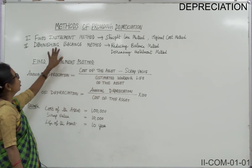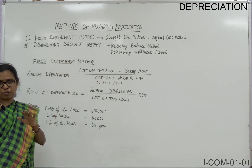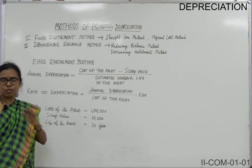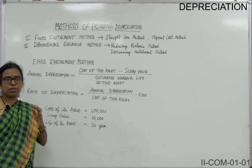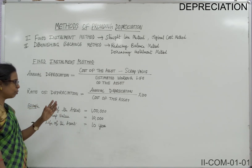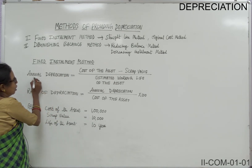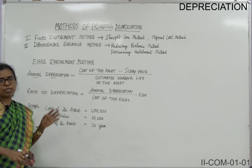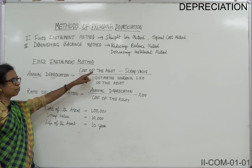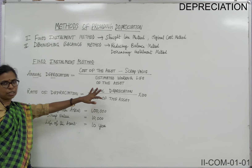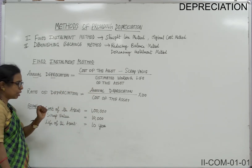In the fixed installment method, the amount of depreciation is fixed, calculated on original cost, and the same depreciation is shown year after year. To calculate depreciation, apply this formula for annual depreciation. You require three things: cost of the asset, scrap value, and estimated working life. Whatever is given in the sum, calculate accordingly.